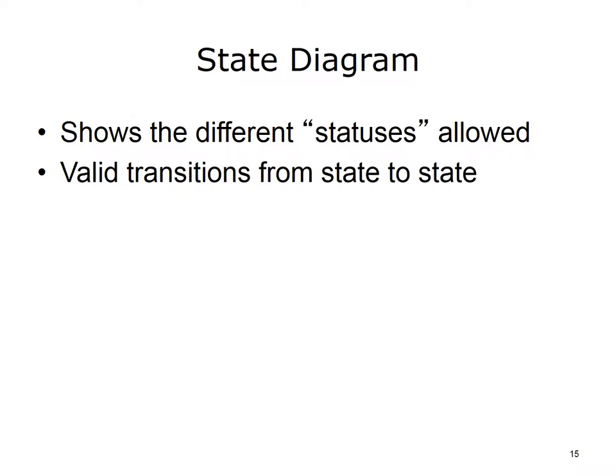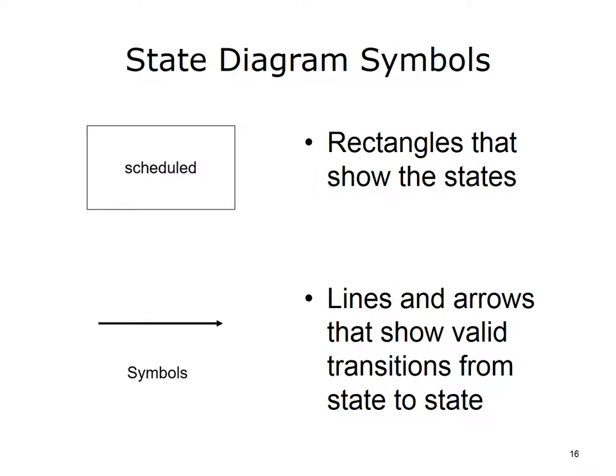A state machine diagram, also called state diagram, shows the different states, also called statuses, allowed as something moves through a process. For example, as information is processed by a system. For example, a prescription may have any of the following statuses: requested by patient, authorized by provider, sent to pharmacy, filled, or not filled. These would be examples of states or statuses that an e-prescription may have. In real-life applications, something like a prescription or other order may have 10, 20, or more states. State diagram symbols are simply rectangles and lines and arrows that denote transition.